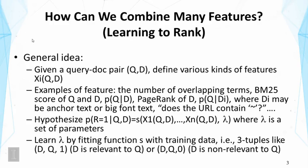The training data looks like a table of tuples, where each tuple has three elements: the query, the document, and the relevance judgment. This is very similar to the relevance judgment tables we discussed in the evaluation of retrieval systems.